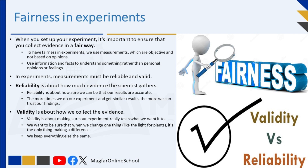Validity is about how we collect the evidence — making sure our experiment really tests what we want it to. We want to be sure that when we change one thing, like the light for plants, it's the only thing making a difference. To do this, we keep everything else the same, like using the same pots, soil, seeds, and watering the plants the same way. This helps us be more certain that any changes in the plants are because of the light and not something else.